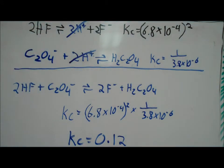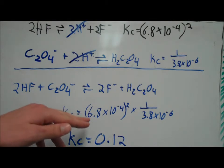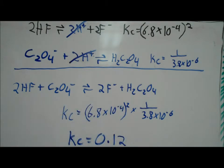Once we've crossed those out, we can now add the first equation to the second equation to get our overall equation here. Because we've added these two equations together, we now take the equilibrium constant values from the first equation and the second equation and we multiply those together.